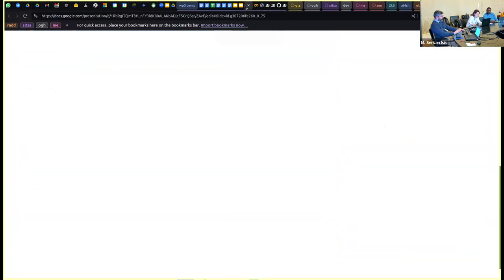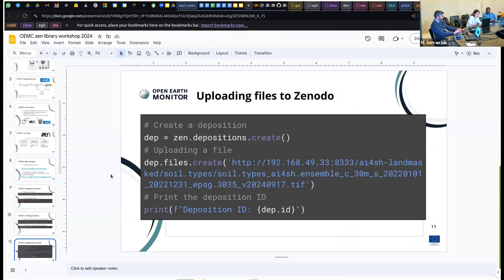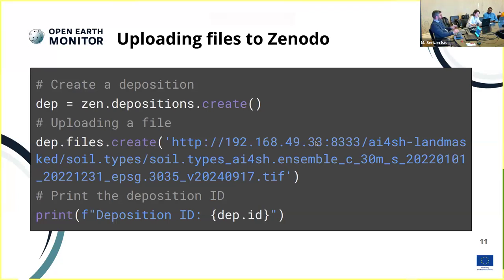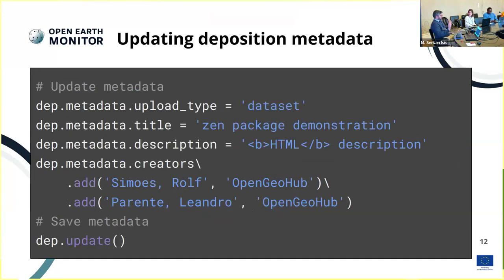To fill in all the metadata describing your dataset using ZEN library, use the metadata property of the deposition object. You can access all the metadata fields from the dep object. After editing the fields, call the update method to save the changes. There are many metadata fields available — for a complete list, see the ZEN library documentation. The minimal required fields are: upload type, description, and the authors or creators of the deposition.